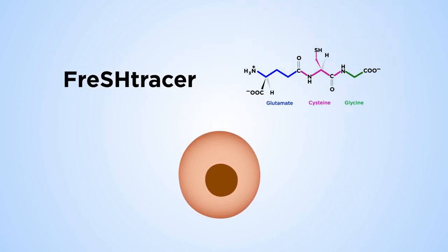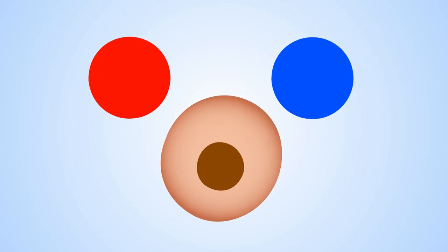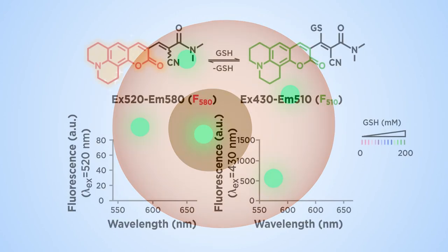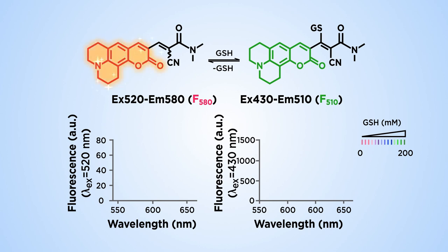In the presence of glutathione, Fresh Tracer gives off fluorescence. The higher the glutathione level, the higher the fluorescence. When Fresh Tracer binds glutathione, it fluoresces at a peak of 510 nanometers.